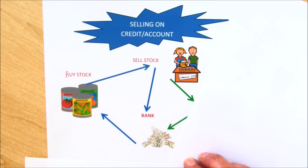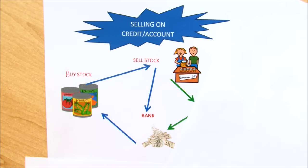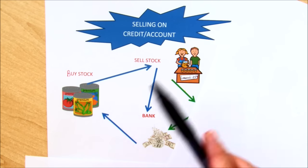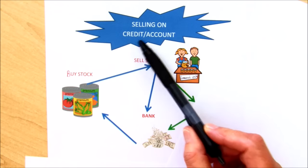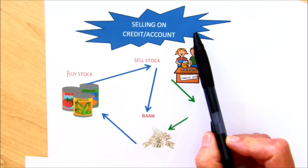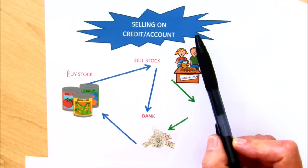Good day learners. Up to this point we've been focusing on cash transactions where we would buy and sell things, but everything was for cash. Now in the business world a large amount of transactions takes place on credit. What we mean by credit is on account — in other words the person doesn't pay immediately.